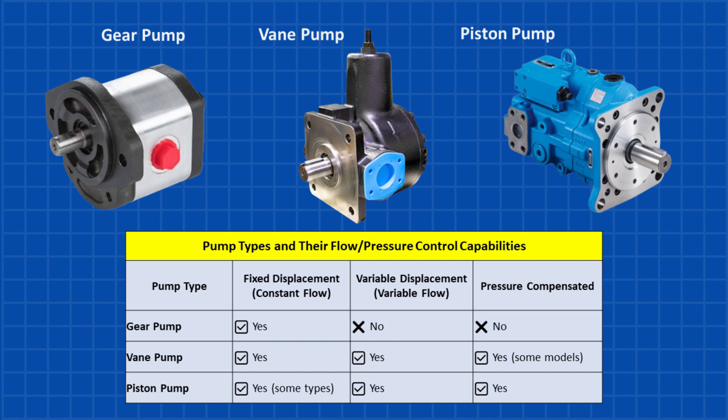There are three main types of pumps – gear pumps, vane pumps, and piston pumps, each used for different applications. Gear pumps have a fixed displacement, meaning they provide a constant flow at a set pressure. Vane and piston pumps, however, can be either fixed or variable displacement. Variable displacement pumps adjust the flow output based on system demand, making them more efficient by reducing wasted energy.